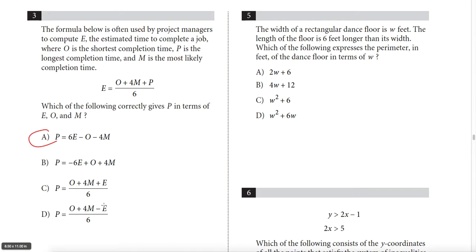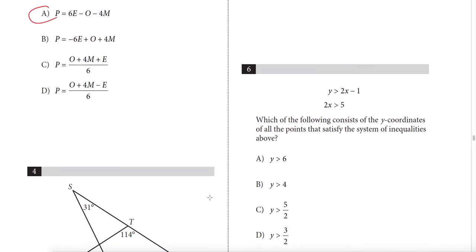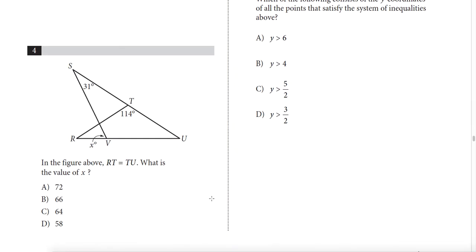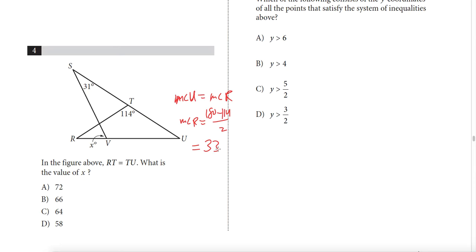Question 4: RT = TU, so the triangle is isosceles. The measure of angle R equals (180 − 114) / 2, which gives 66/2 = 33. We label this 33 degrees, and call the vertical angle Y since vertical angles are equal.